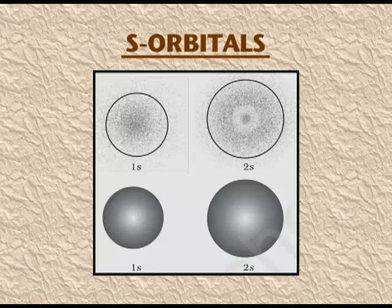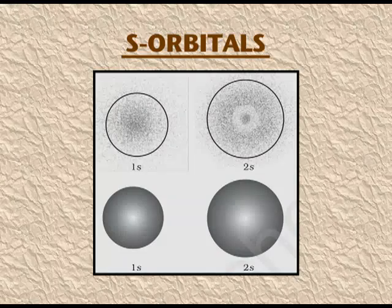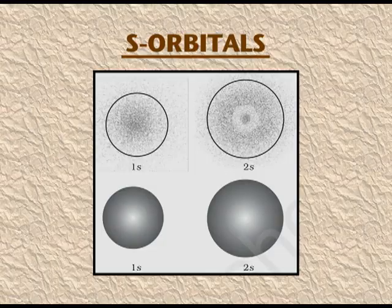Now let me tell you the shapes of the various orbitals. The s orbital is spherically symmetrical, meaning the chances of finding the electron around the nucleus are equal in all directions. The size of the 2s orbital is larger than the 1s orbital, and similarly the size of the 3s orbital is larger than the 2s orbital.